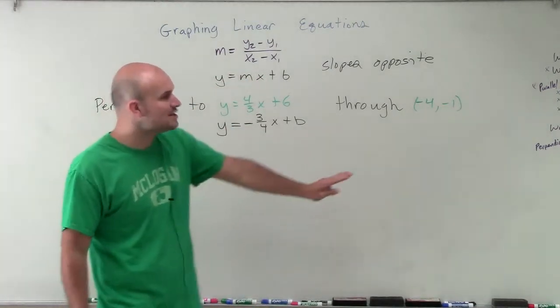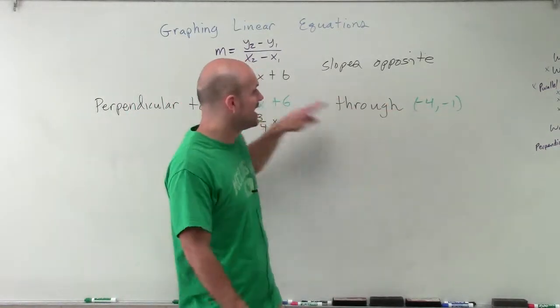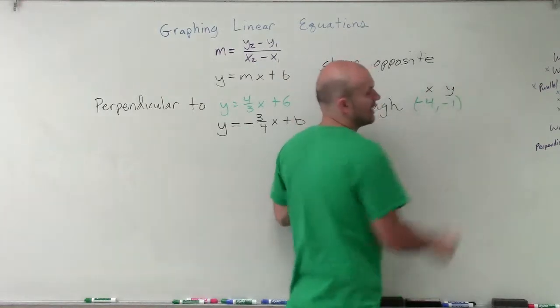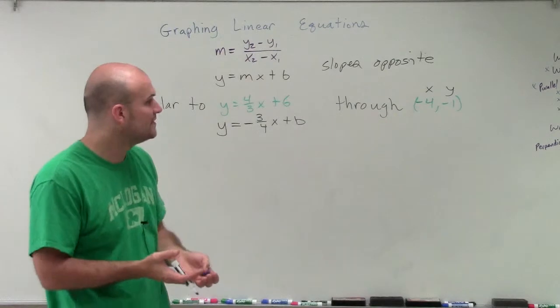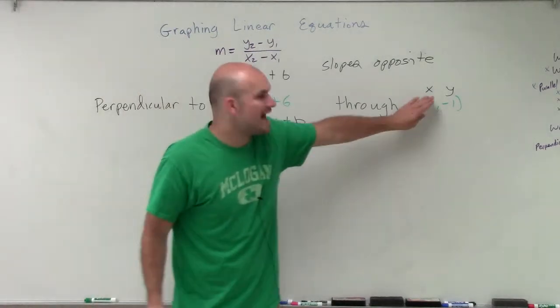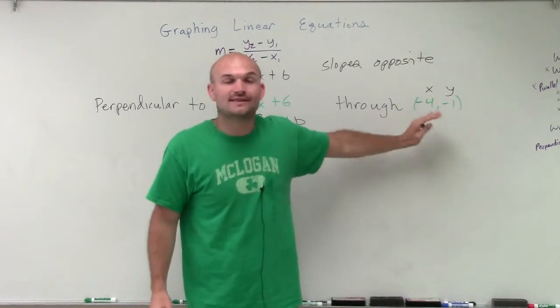The only thing I know is that my new equation that is perpendicular to my line goes through the point negative 4, negative 1. And that point is a solution to my new graph. So therefore, I have a coordinate of x and y for that point on the line.